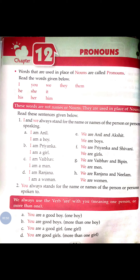First we talk about 'I' and 'we.' 'I' is always used for the name or names of the person or persons speaking. If I am speaking, I am the first person, so for myself I will use 'I.' For example: I am Anil, I am a boy. Whenever you give your introduction, you say: I am a boy, I am a girl. So 'I' is used for ourselves.